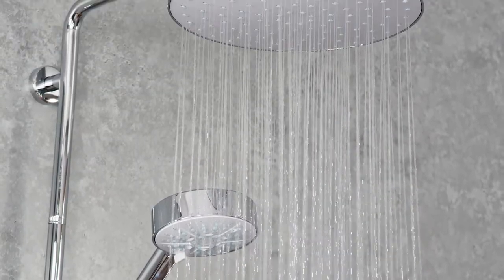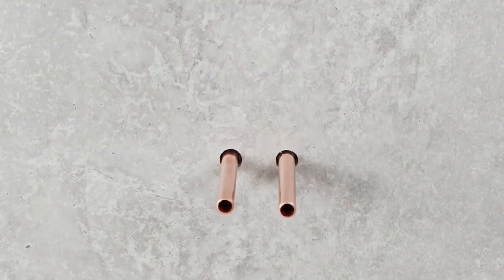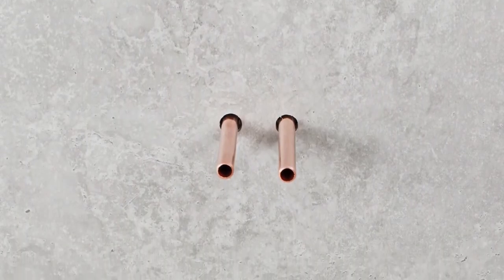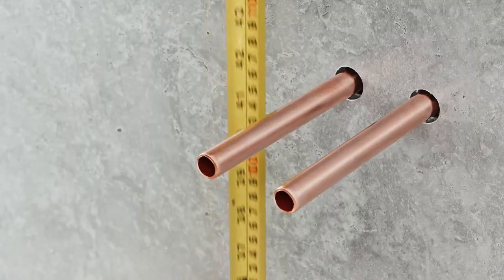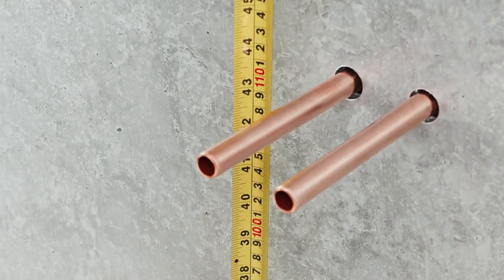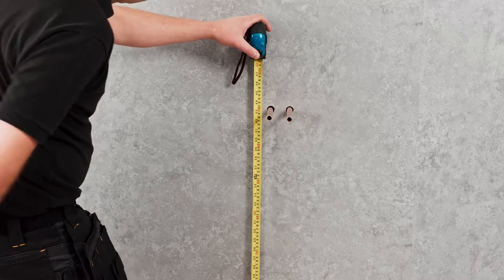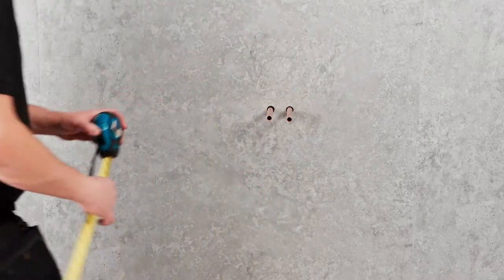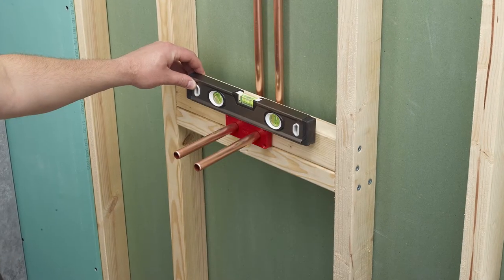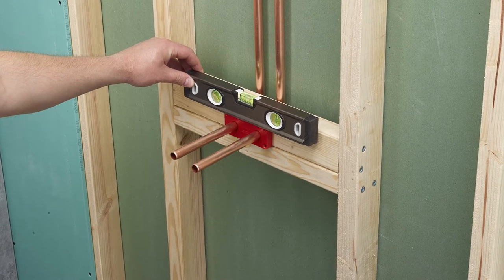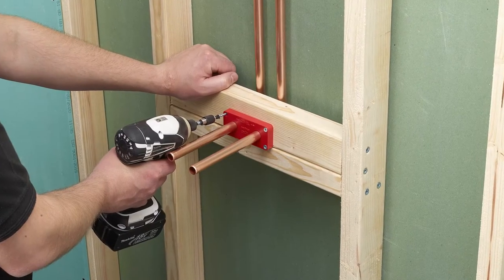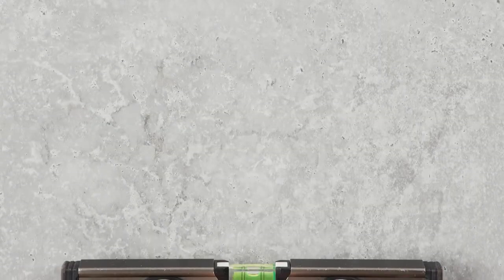Designed for new installations, the installation of the pipework should be completed as part of the first fix of the installation and located at a suitable height for the user to operate the valve ergonomically and allow enough clearance for the ceiling for the overhead deluge. A first fix pipe guide is supplied to help ensure that the pipework is correctly separated to 50mm between the hot and cold suppliers.